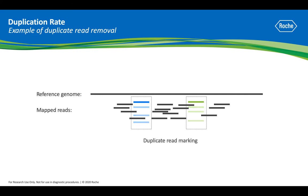To eliminate artificial overrepresentation of these sequences, these reads should be filtered from the sequencing data, otherwise they can lead to biased and inaccurate SNP calling, variant calling, and assessment of genome coverage.